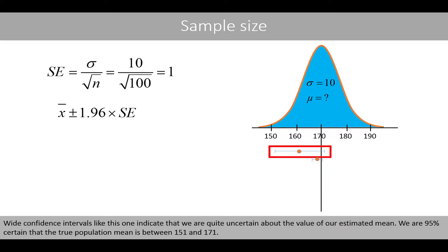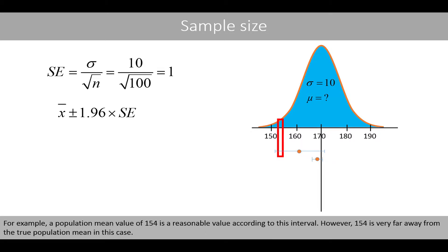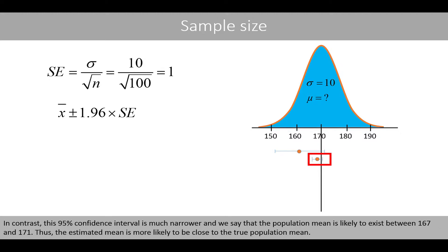Wide confidence intervals indicate that we are quite uncertain about the value of our estimated mean. We are 95% certain that the true population mean is between 151 and 171. For example, a population mean value of 154 is a reasonable value according to this interval. However, 154 is very far away from the true population mean in this case. In contrast, this 95% confidence interval is much narrower and we say that the population mean is likely to exist between 167 and 171. Thus, the estimated mean is more likely to be close to the true population mean.